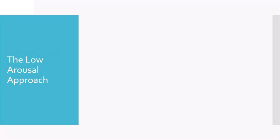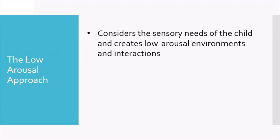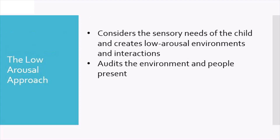In thinking about the arousal cycle, it's helpful to think about having a low arousal approach. It's important to meet your child's sensory needs and to think about how the environment is — not only the environment itself but also the interactions between the child and the person trying to support. It might be helpful to audit the environment and the people present: what is going on in stage two all the way up to meltdown? Who is around? Is there a lot of noise? Is it very bright? Is there a lot of language? Is it very hot? Reducing some of those external factors can have a positive effect.